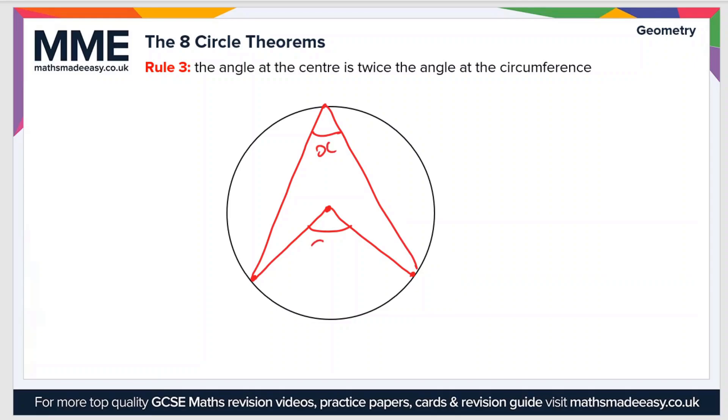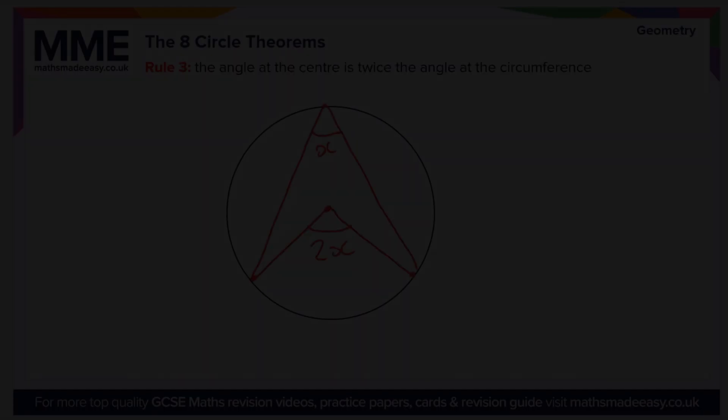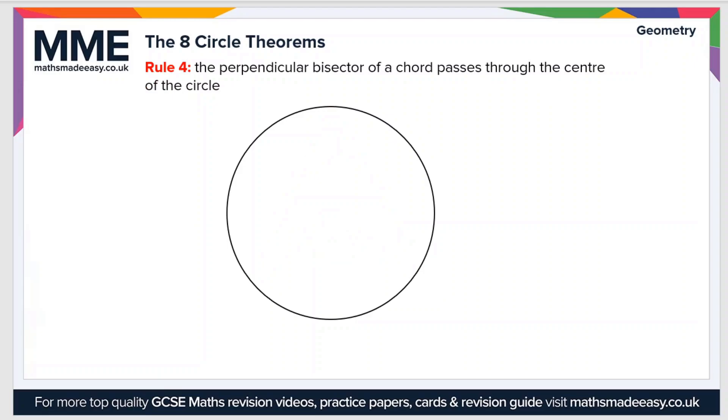So finally, rule number four: the perpendicular bisector of a chord passes through the center of a circle. Let's draw a chord, which is a straight line joining two points on the circumference of a circle. And then a perpendicular bisector is a line which is perpendicular to the chord and cuts it exactly into two so that these two parts are equal. Well, this line will pass through the center of the circle here.